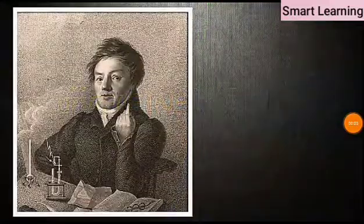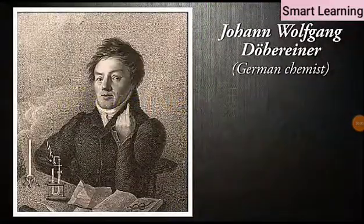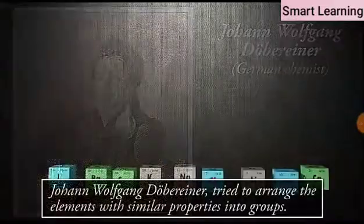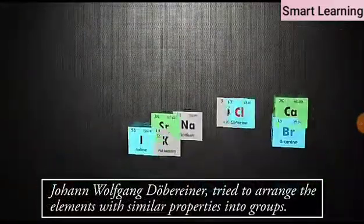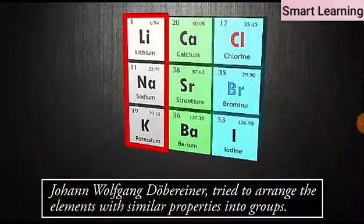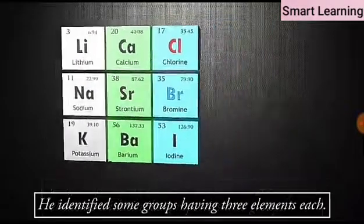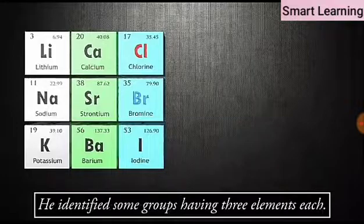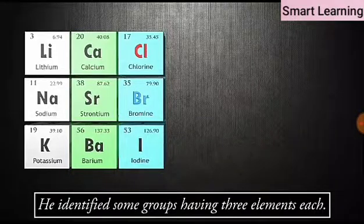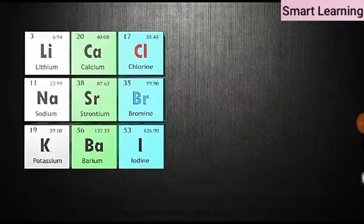In the year 1817, Johann Wolfgang Dobereiner, a German chemist, tried to arrange the elements with similar properties into groups. He identified some groups having three elements each, so he called these groups triads.